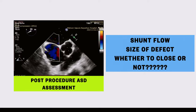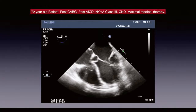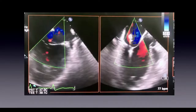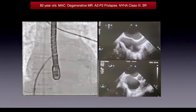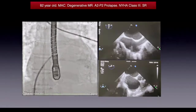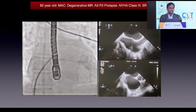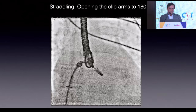A 3D TEE shows two clips implanted with residual minimal mitral regurgitation. An example of post-CABG functional MR: one clip was implanted, showing double-orifice mitral valve with no mitral regurgitation. For degenerative MR, surgery is better, but here is an 82-year-old with mitral annular calcification and A2-P2 prolapse: standard septal puncture and 3D TEE, with one clip implanted.